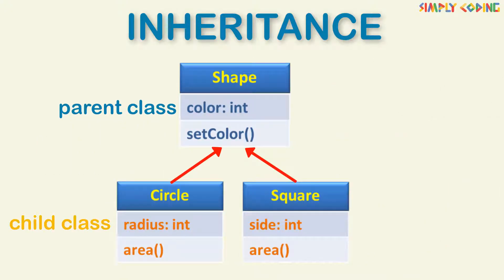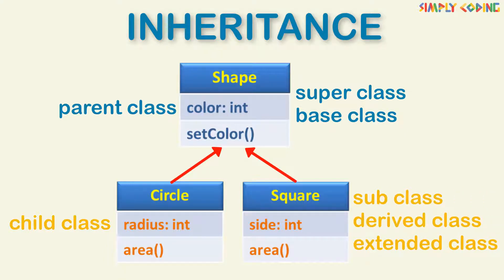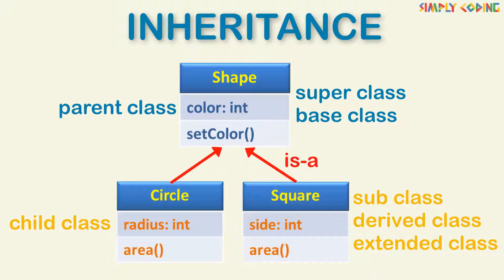The parent class from which the child class is derived is called the superclass or base class. The child class that is inherited or derived from another class is also called a subclass, derived class, or extended class. In questions, they can use any of these terms, so do not get confused if any of these alternative names are used. To show inheritance, the arrow always points from the child class to its parent class.